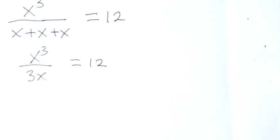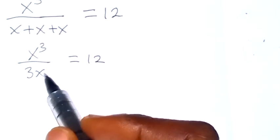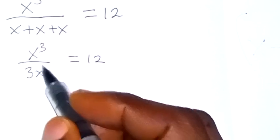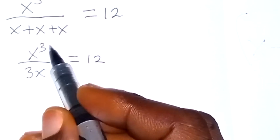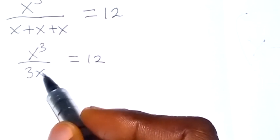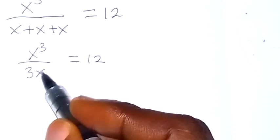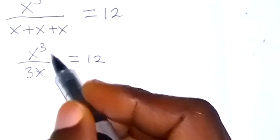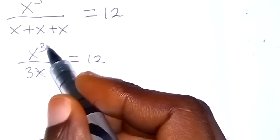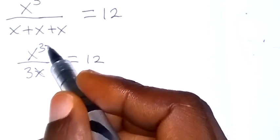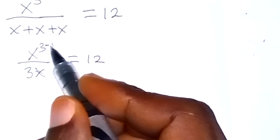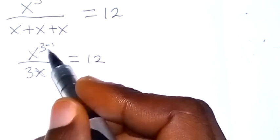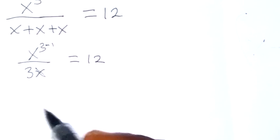And from here, we can divide. 1x can cancel 1 of the x here. So if x cancels 1x here, this one will remain with the exponent reduced by 1, which is raised to the power 2 remaining.